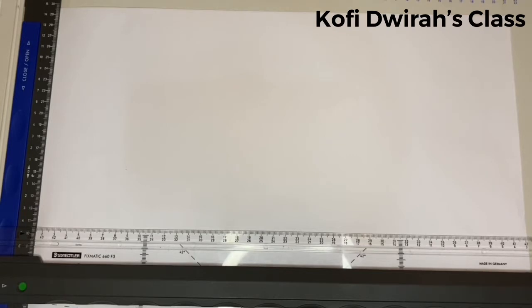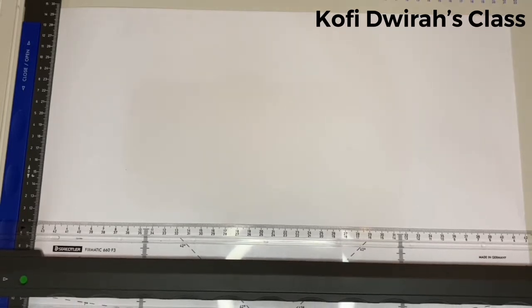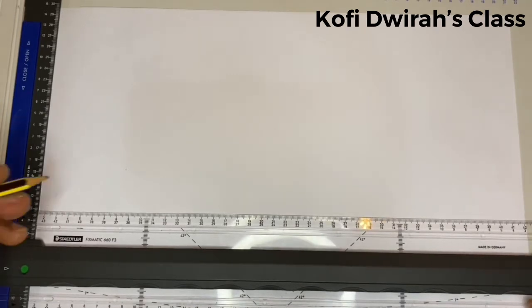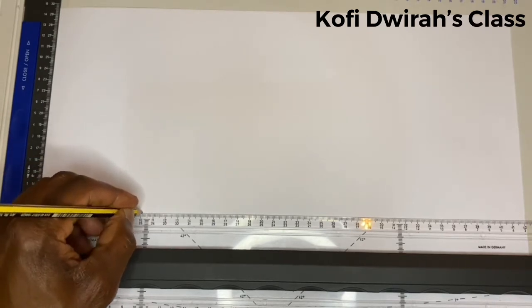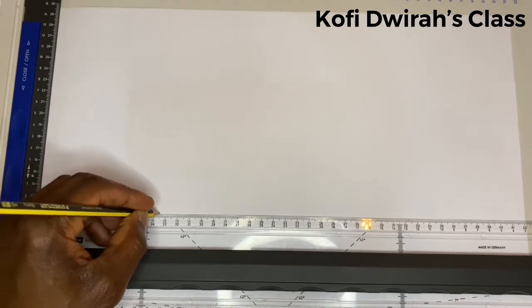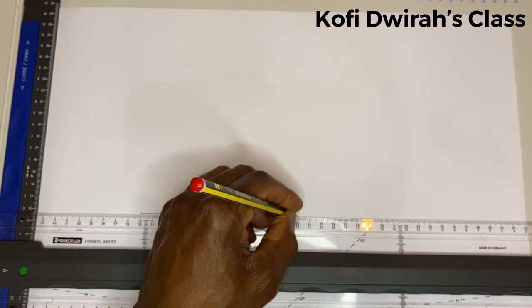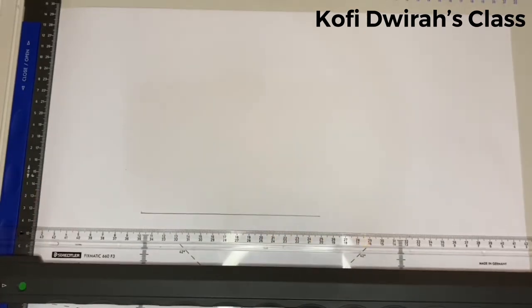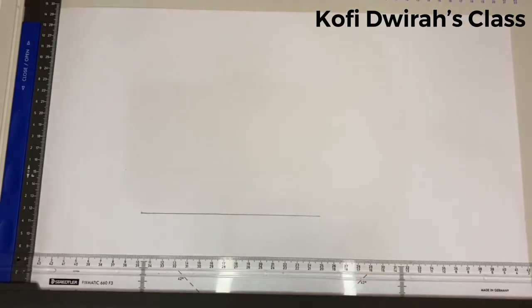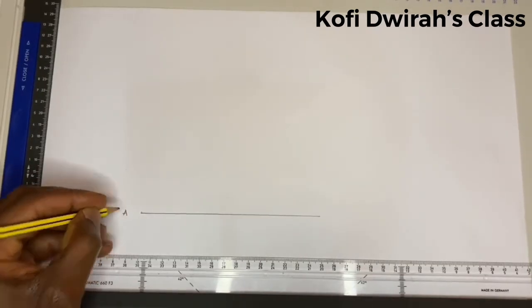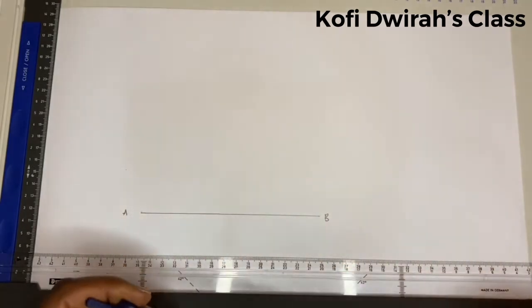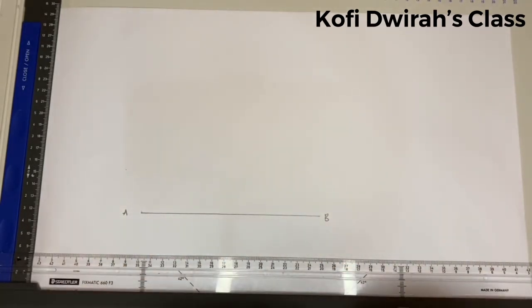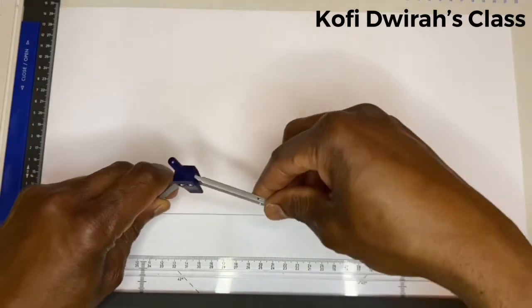First we choose an equilateral triangle. We first draw one side of the triangle — let's consider that side to be about 15 centimeters. We have this side labeled A and B. This is an equilateral triangle, so all three sides are equal, so you measure 15 centimeters.